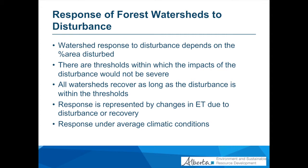Basically, a watershed responds according to how much of it is disturbed. Literature has shown that if less than 20% of a watershed is disturbed, there's no significant change in the response. But at 20% or more, you begin to have significant change. Literature also tells us there are thresholds within which the watershed can recover over time back to its pre-disturbance state. Beyond those thresholds, you have changed the trajectory of the watershed.